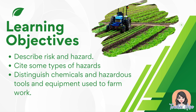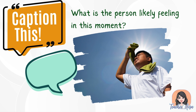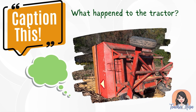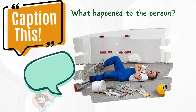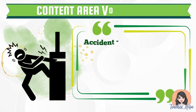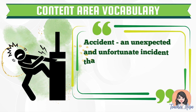Before we start, let's have a short activity. What do you think is the person likely feeling at that moment? How about this picture — what do you think happened to the tractor? What do you think happened to the person in the picture? Now let's unlock some vocabulary words related to our lesson.